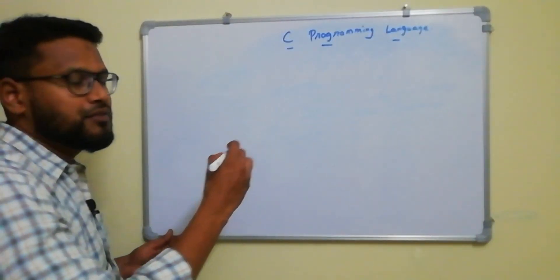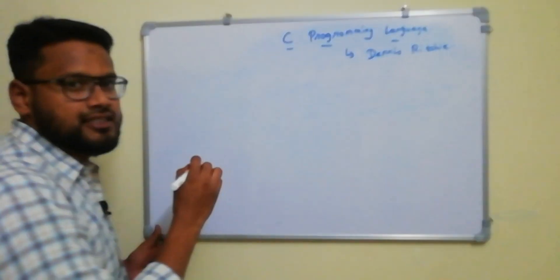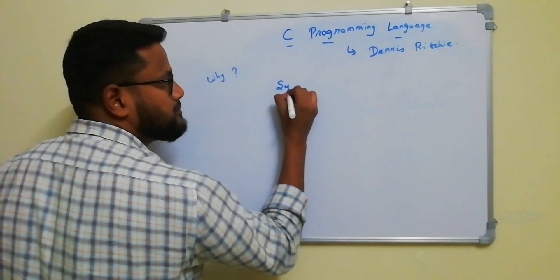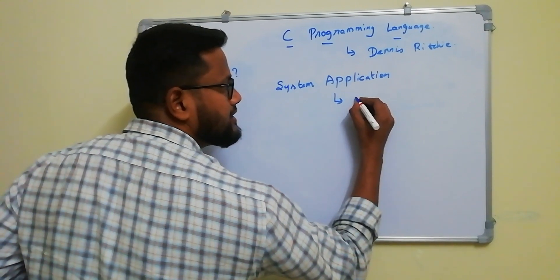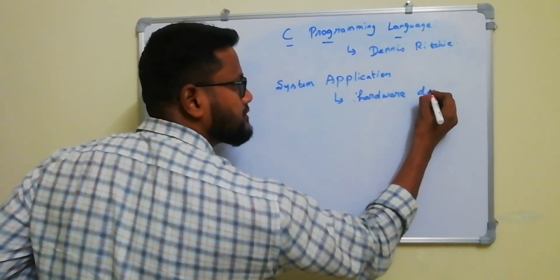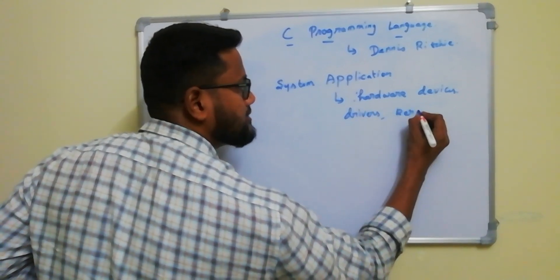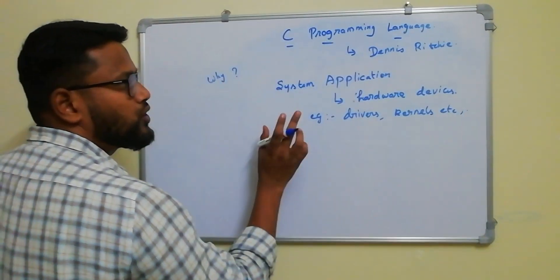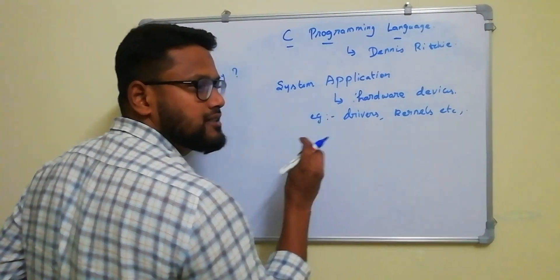What is C programming language? Before that, it is developed by Dennis Ritchie. Why do we use C programming? Because it is used to develop system applications and to interact with hardware devices like drivers and kernels. So, C programming is used to develop system applications to interact with hardware devices like drivers and kernels.